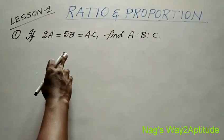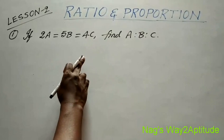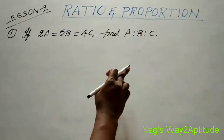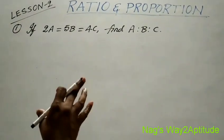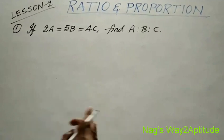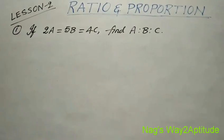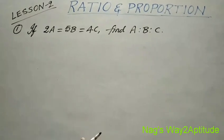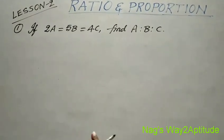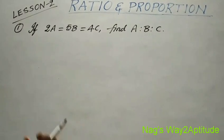If 2a is equal to 5b is equal to 4c, find a is to b is to c. We can solve this problem in two ways. First, I will explain the conventional method. We should not follow this conventional method in competitive examinations, but for your concept, I will explain the conventional method.